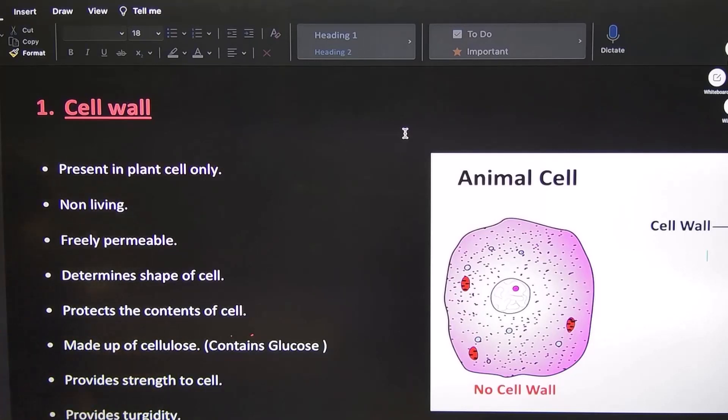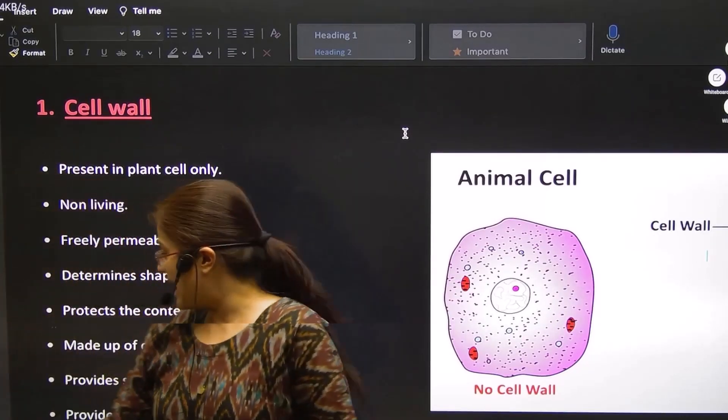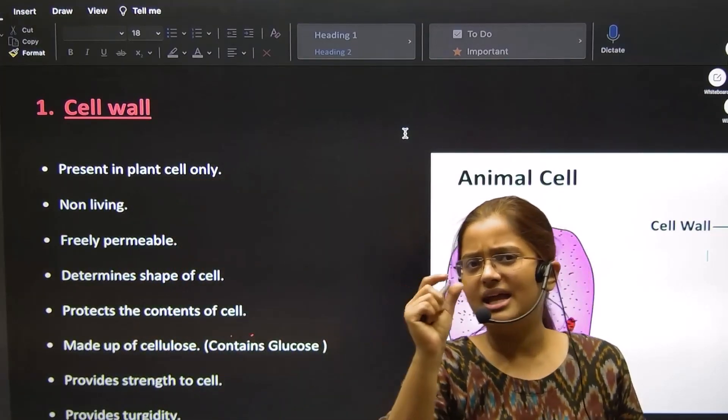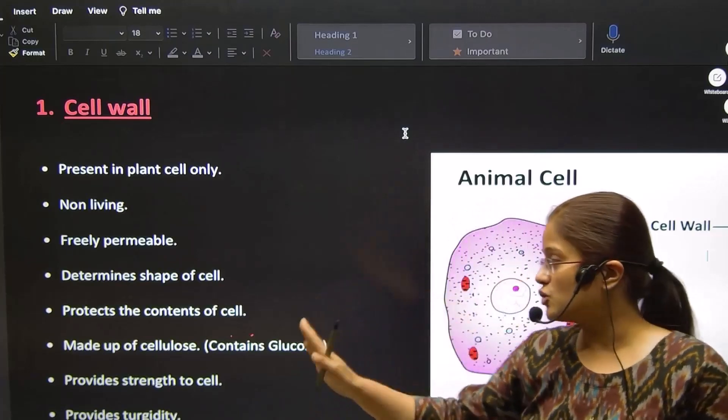What does it provide? It also provides turgidity. Last point, it provides turgidity. Turgidity means flexibility and rigidity. The level of the beach is turgidity.